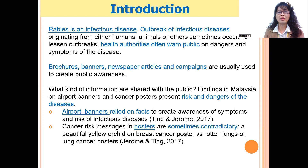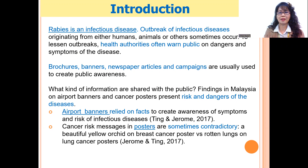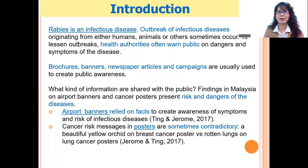At the moment, we know based on two studies that airport banners usually use facts, whereas posters placed in hospitals may use pictures and text, and may include contradictory information — such as a beautiful yellow orchid on a breast cancer poster versus rotten lungs on a lung cancer poster.